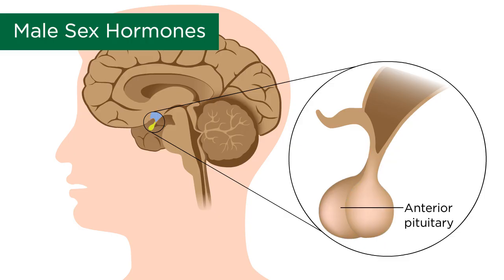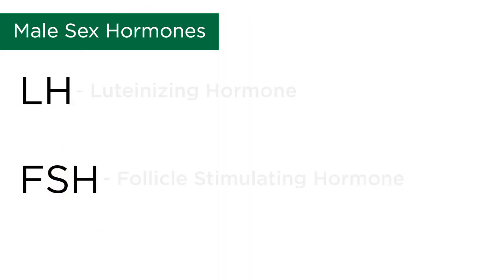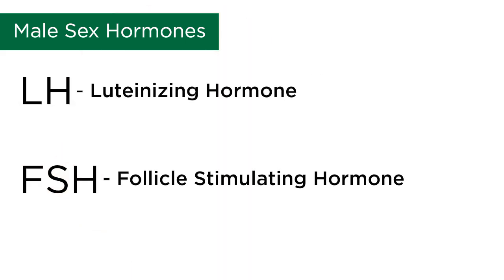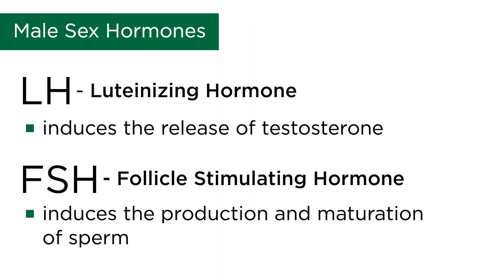Within the anterior pituitary, gonadotropic hormones — luteinizing hormone and follicle stimulating hormone — are released. The main function of luteinizing hormone in the male is to induce the release of testosterone, while the main function of FSH is for the production and maturation of sperm.